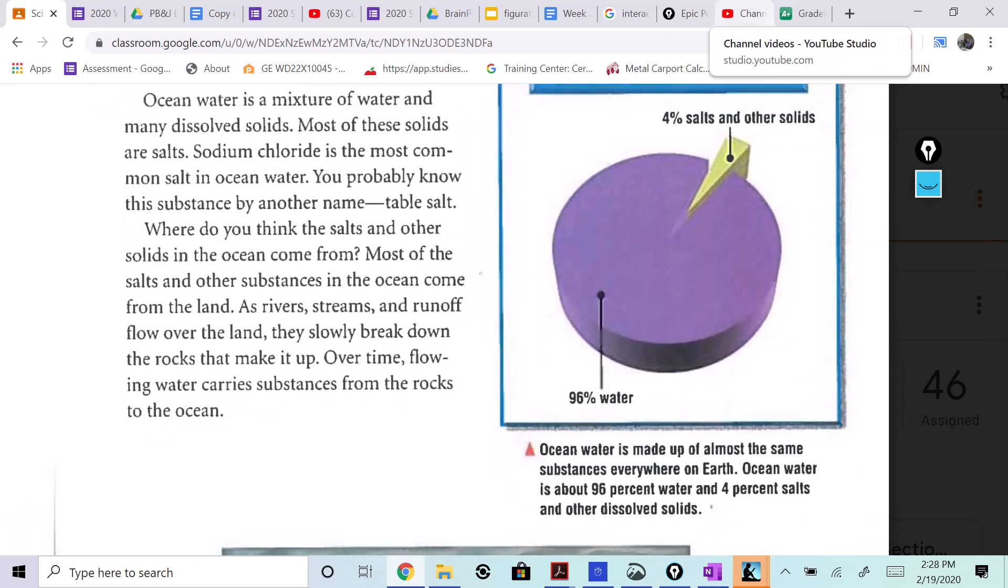Where do you think salts and other solids in the ocean come from? Most of the salts and other substances in the ocean come from the land. As rivers, streams, and runoff flow over the land, they slowly break down the rocks that make it up. Over time, flowing water carries substances from the rocks to the ocean.